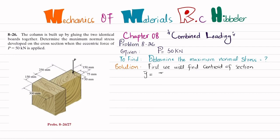The centroid can be found using the formula: ȳ = Σ(y̅ · A) / ΣA. Let board number one and board number two be the two elements. Applying the formula: ȳ = (y₁·A₁ + y₂·A₂) / (A₁ + A₂).